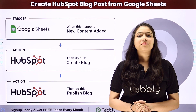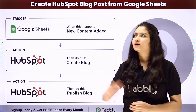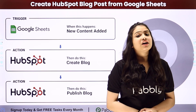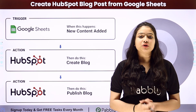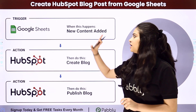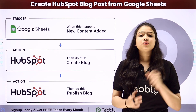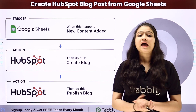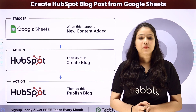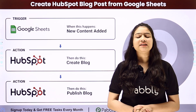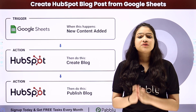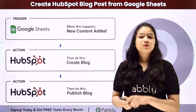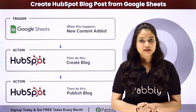Hello everyone, welcome back to Pably Connect. In this video, we are going to learn how to create HubSpot blog posts from Google Sheets. My objective is that as soon as I add a new title and content in my Google Sheets for a blog, automatically a blog should be created in HubSpot CRM and then the same blog should automatically be published. We will set up this connection without any coding or programming skills, with the help of Pably Connect.